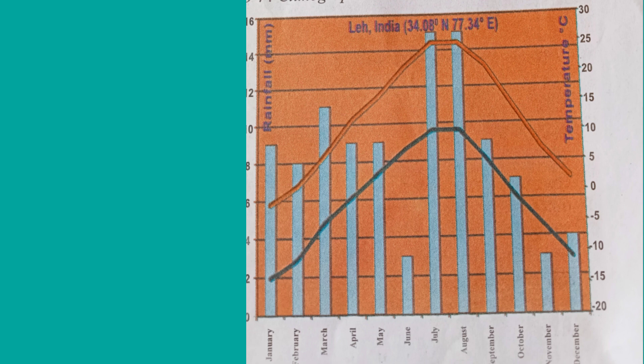Now let us see the Leh climatograph. Leh is the capital of Ladakh, which is a Union Territory of India. The X-axis indicates months from January to December. The Y-axis on the left side indicates rainfall in millimetres, and on the right side indicates temperature in Celsius.